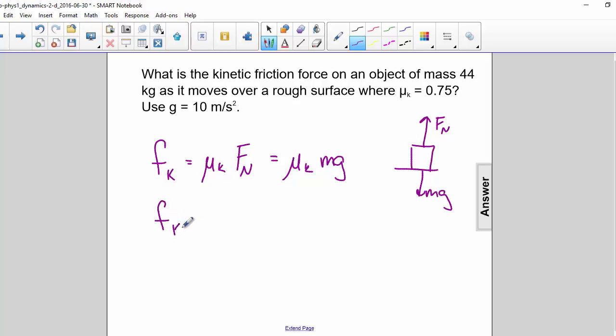So the force of kinetic friction equals the coefficient 0.75 times the mass 44 kg times g, and we're using 10 m/s².